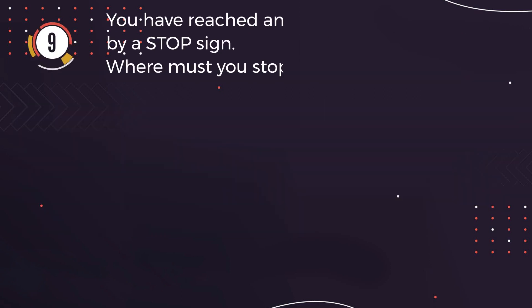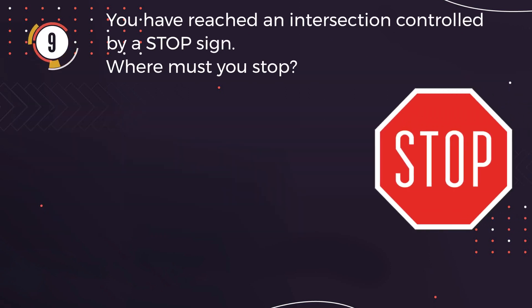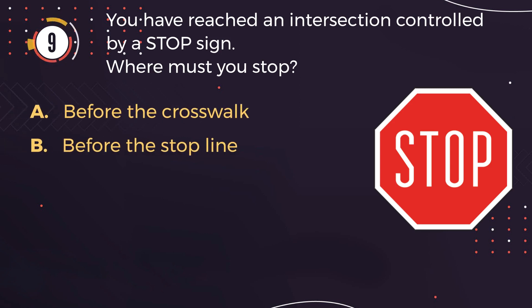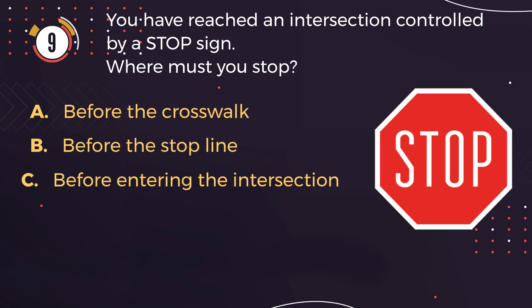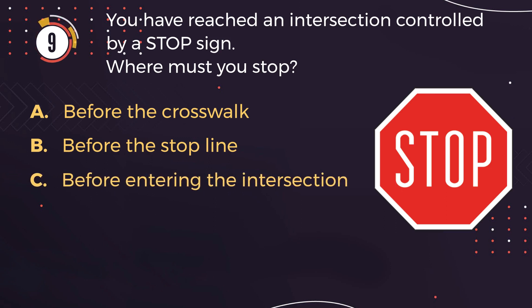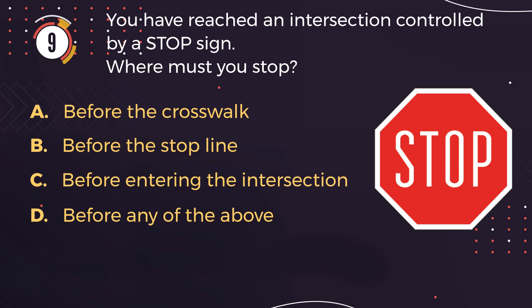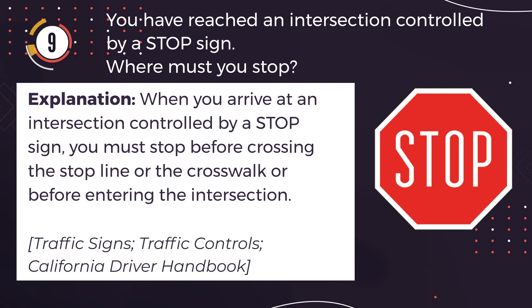Number 9. You have reached an intersection controlled by a stop sign. Where must you stop? A: Before the crosswalk. B: Before the stop line. C: Before entering the intersection. D: Before any of the above. The correct answer is D: Before any of the above. Explanation: When you arrive at an intersection controlled by a stop sign, you must stop before crossing the stop line, or the crosswalk, or before entering the intersection.